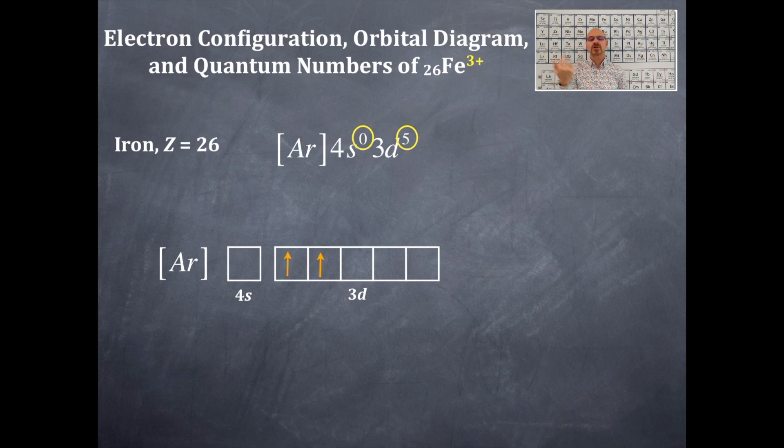So I'm going to have five electrons to place in the 3d. So there's one, there's two, there's three, there's four, and there's five. So is this paramagnetic or diamagnetic? Do I have any unpaired electrons in iron? Oh my gosh, totally five of them. So this is paramagnetic.